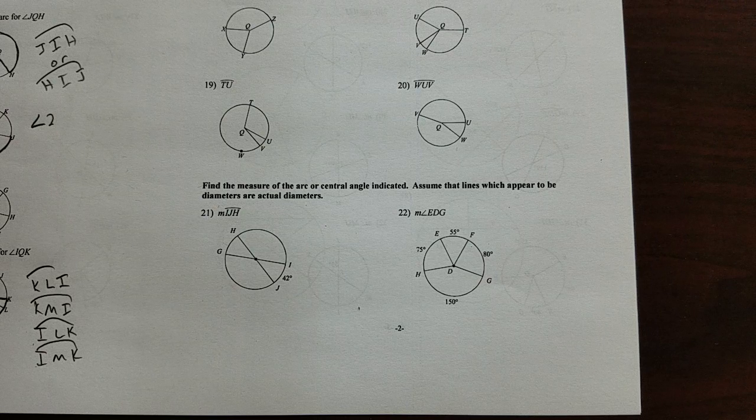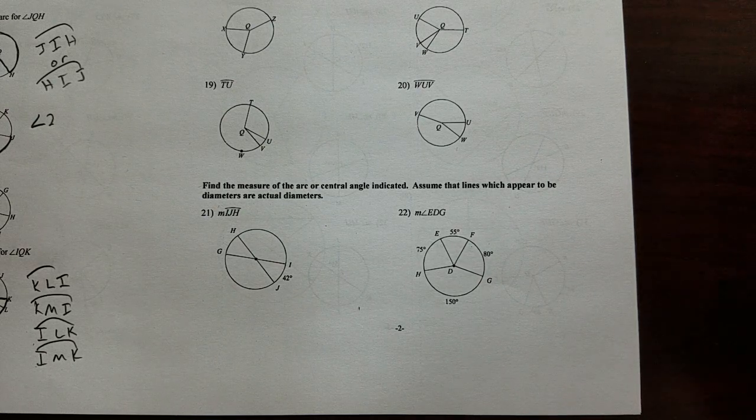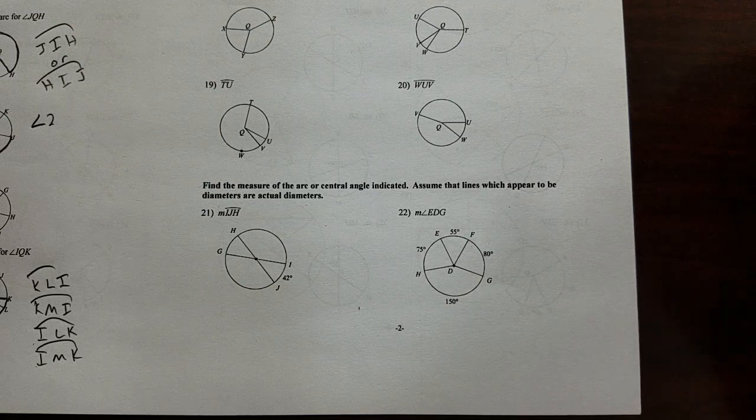Okay, well it turns out that we measure an arc the same as the central angle that makes it. Because there's 360 degrees in a circle, there are 360 degrees in an arc as well.